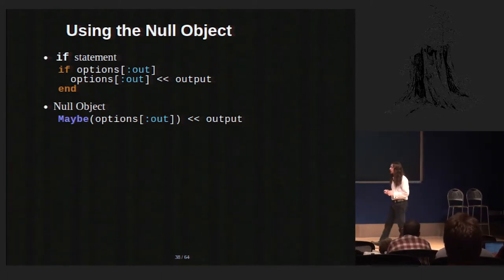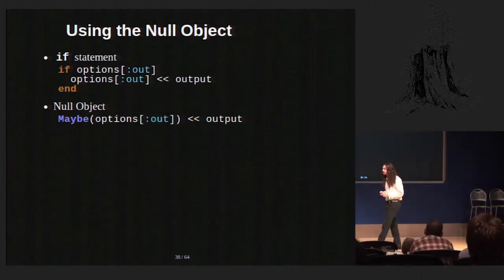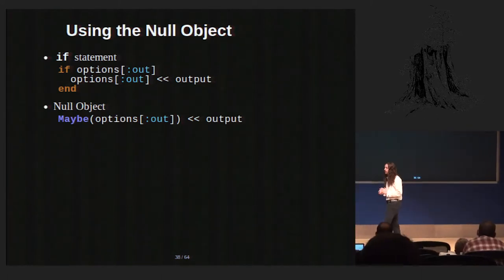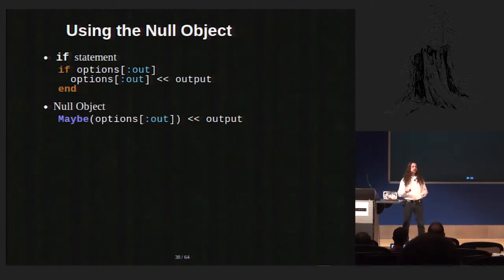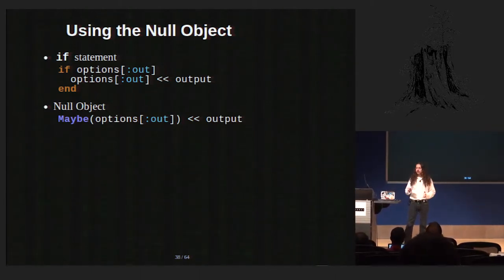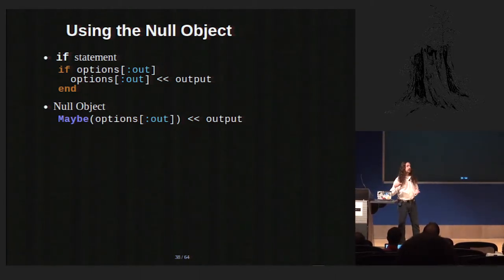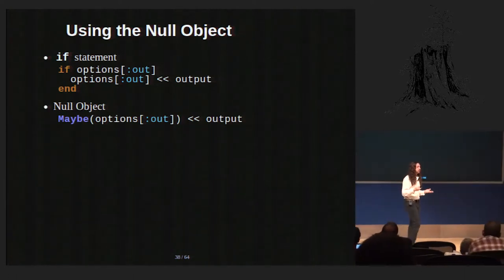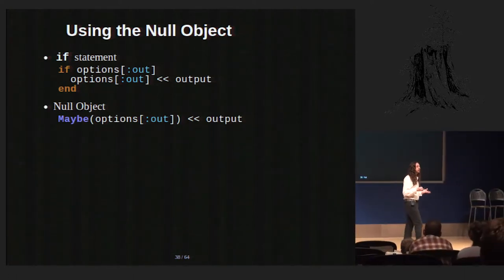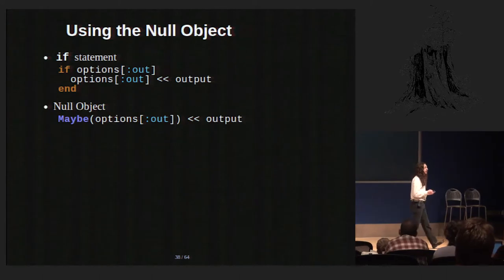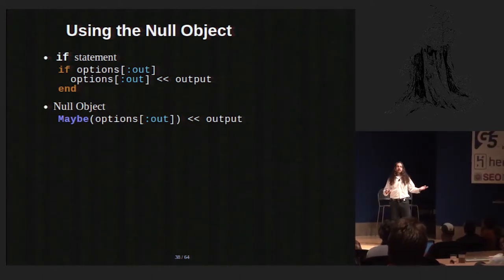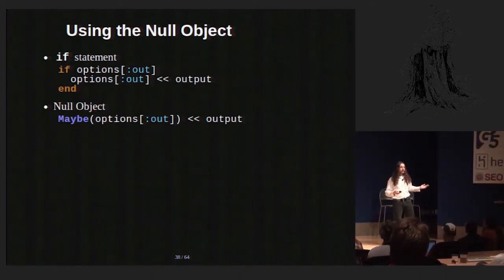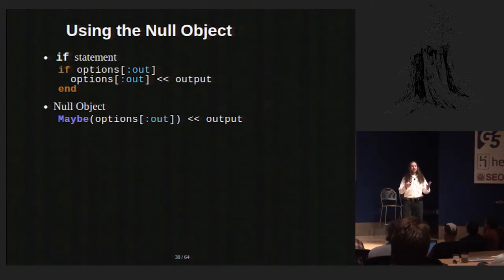We can use this in the cowsay code. We've got this if statement where we say if the out option is set, then write the output to it. If it's not set, we don't want to do that. We can replace that with our null object and then confidently write the output to it, because we know that even if it's nil, it'll silently do nothing.